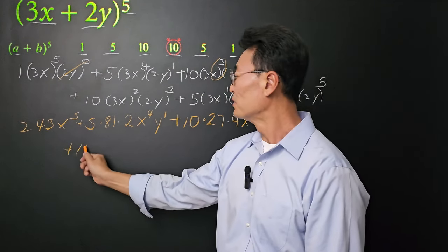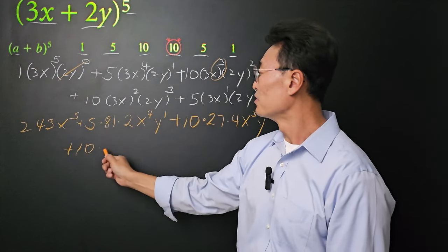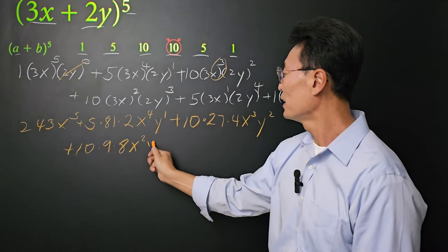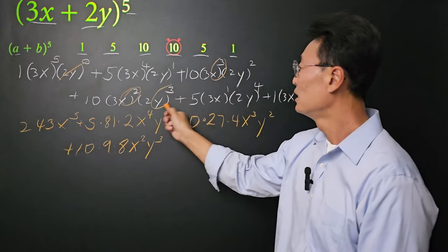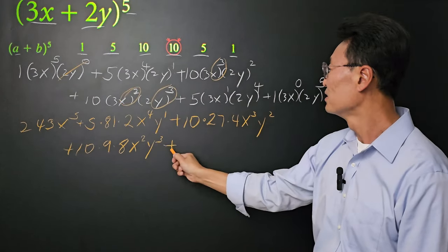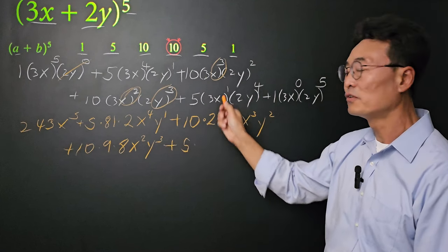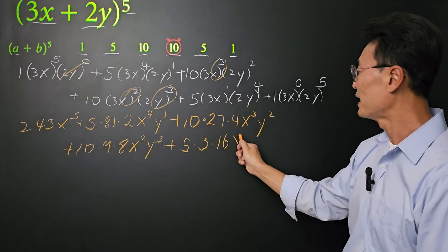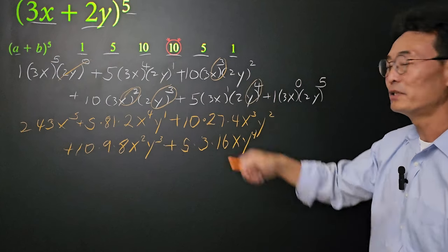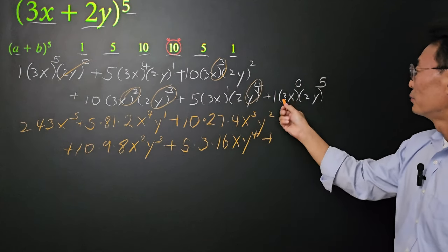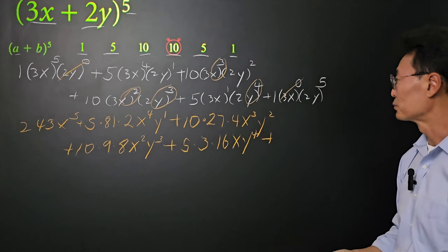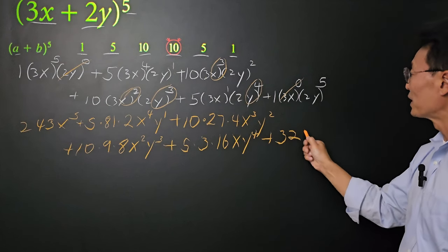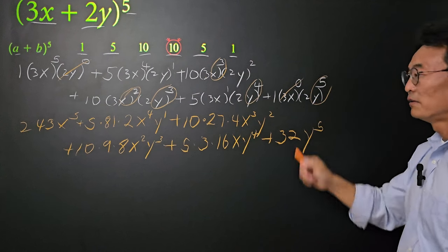Continuing: we have 10, and 3 squared is 9, 2 cubed is 8, and we have x squared and y cubed. Plus, we have the 5 to start with, and 3 to the 1st power is 3, and 2 to the 4th is 16. We have x and y to the 4th. Plus, 3 to the 0 power is 1, so we don't have to worry about that. 2 to the 5th power is 32, and we have y to the 5th power.